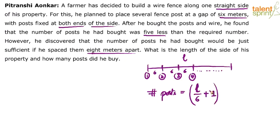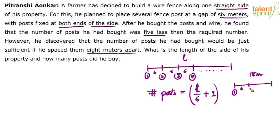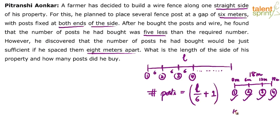This has been explained in previous videos, but here is a simple example. Let's say the length is 18 meters and you want to put posts at a gap of 6 meters each. If you say the number of posts is L by 6, then 18 by 6 is 3. But let's actually count: the first post comes at 0 meters, the second at 6 meters, the third at 12 meters, and the fourth at 18 meters. So 4 posts are required — but 18 by 6 is only 3.